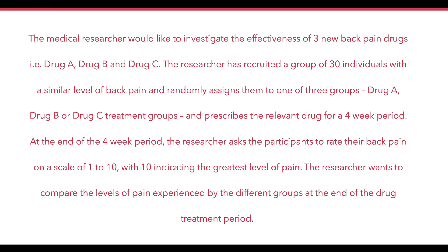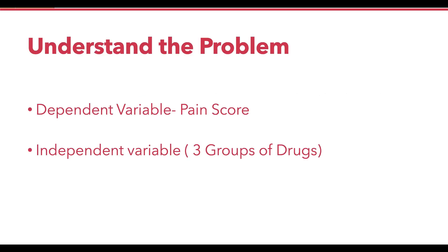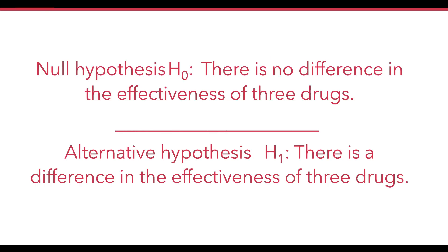The dependent variable in this case is pain score and the independent variable is the three groups of drugs: drug 1, drug 2, and drug 3, with each group comprising 10 participants. The null hypothesis is that there is no difference in the effectiveness of the three drugs, and the alternate hypothesis is that there is a difference in the effectiveness of these drugs.